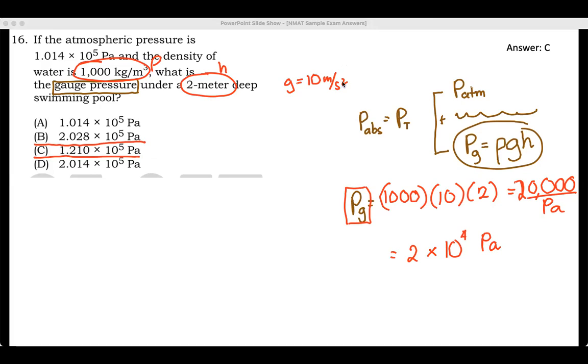Maybe, maybe they're not really looking for the gauge pressure. Maybe they're looking for the absolute pressure, which is the sum of the atmospheric and the gauge. And we have here the atmospheric pressure, which is this one. So let's try. Maybe this is the one that they're looking for.